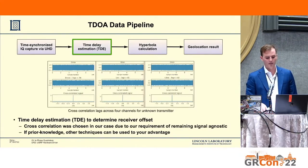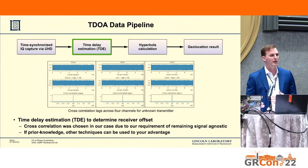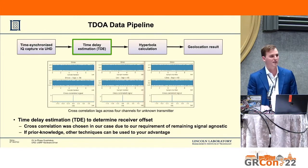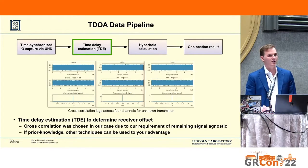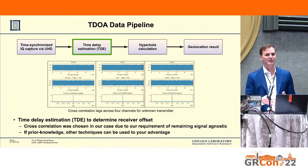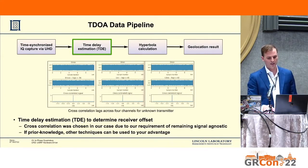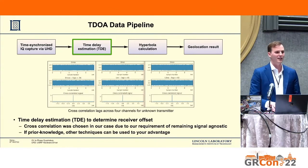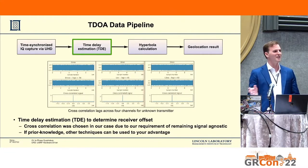We then perform the time delay estimation step utilizing cross-correlation. If you know more about the signal you can utilize a matched filter or some more advanced technique. But if you want to remain extremely signal agnostic and work across a lot of different signals, one common method is to utilize cross-correlation. We do a simple time domain cross-correlation on the raw IQ samples. The only downside is that you have to have all four data streams back at a central node before you're able to perform this step. It causes a nice spike in the cross-correlation when you have the same signal at all four receivers.